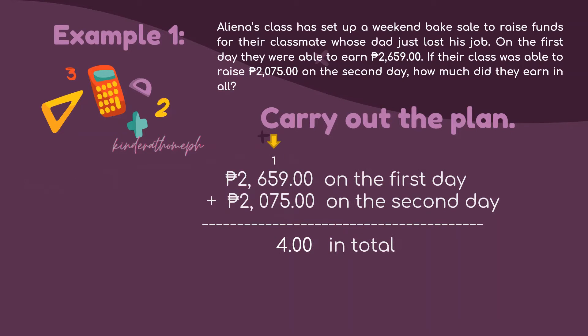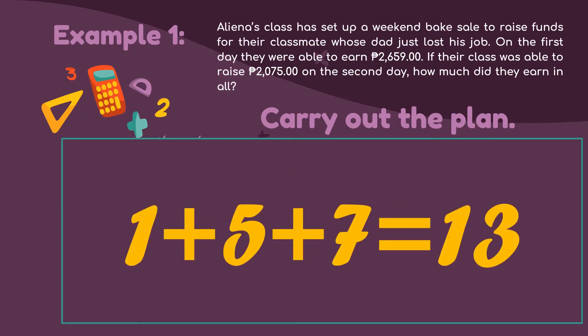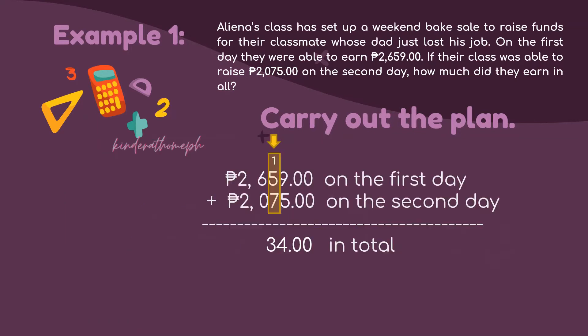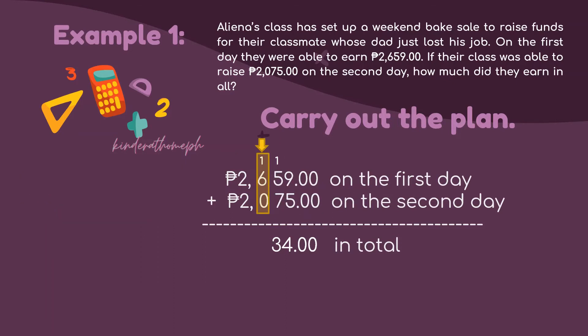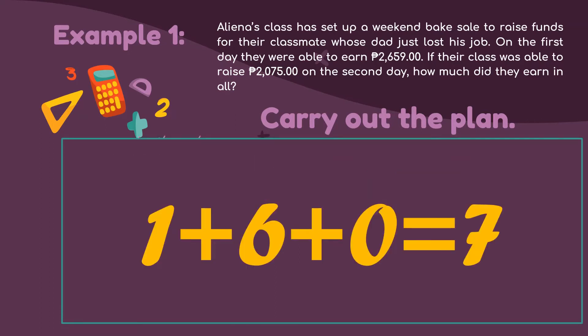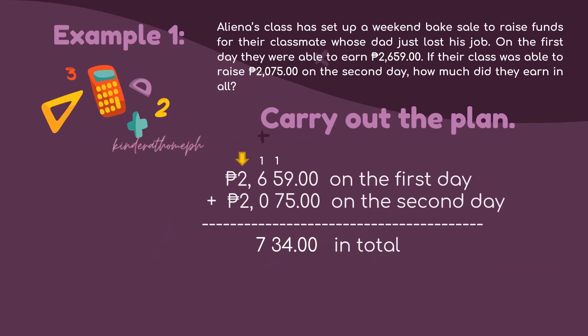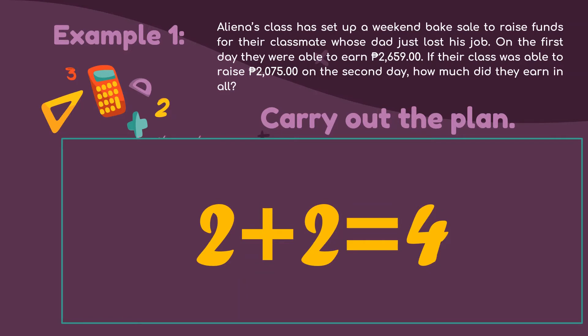Moving to the tens place, we have digits 1, 5, and 7. Adding them together: 1 plus 5 plus 7 equals 13. We put 3 down in the sum and carry 1. In the hundreds place, we have 1, 6, and 0, which when added together gives us 7. We put 7 down — nothing to carry since 7 is less than 10. In the thousands place, we have 2 and 2, whose sum is 4. We write 4 in the sum.